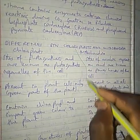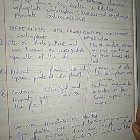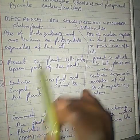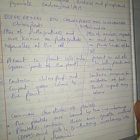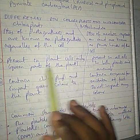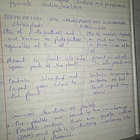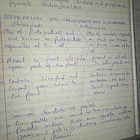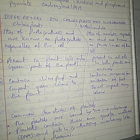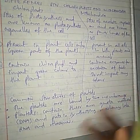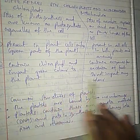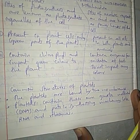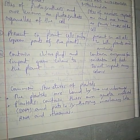Differences between Mitochondria and Chloroplasts: Chloroplasts are the site for photosynthesis, while mitochondria are the site for aerobic respiration. Chloroplasts are present only in plant cells (green parts), while mitochondria are present in both plant and animal cells. Chloroplasts contain chlorophyll and impart green color, while mitochondria contain enzymes for oxidation of food and do not impart any color.